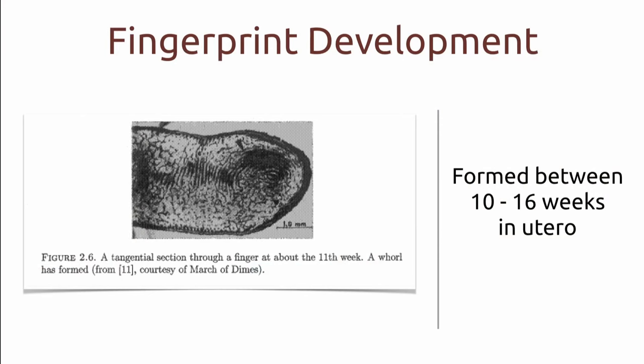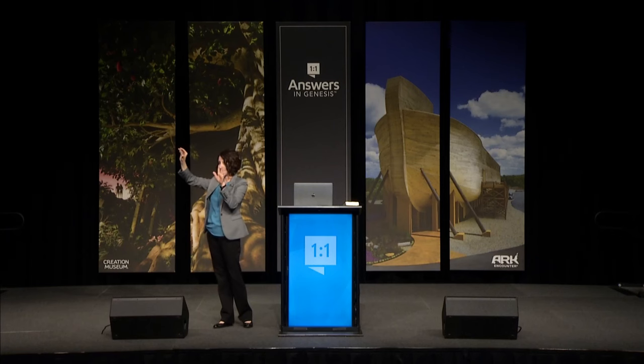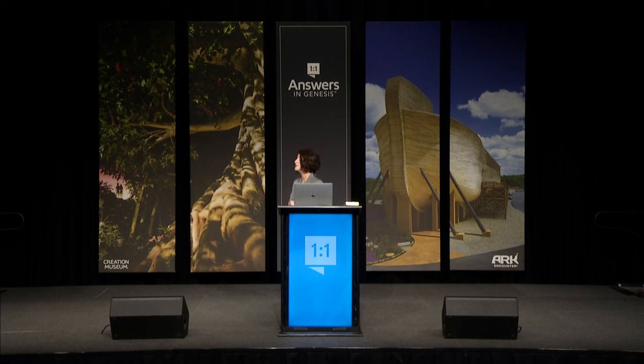We do know when fingerprints develop — actually in the mother's womb between 10 and 16 weeks. This is an image taken by the March of Dimes of a baby in its mother's womb at 11 weeks old, already having its friction skin and this beautiful whorl pattern on its fingertip. At 10 weeks old a baby is incredibly small — that's how small it is. Each of you, when you were this size in your mother's womb, already had the complete set of fingerprints you see on your hands today, given by your creator God — a unique identity. The Bible tells us in Psalms 139:14, 'I praise you, for I am fearfully and wonderfully made.'